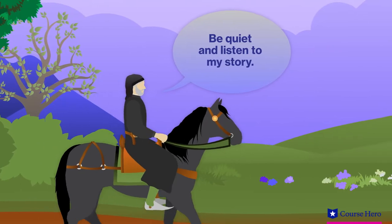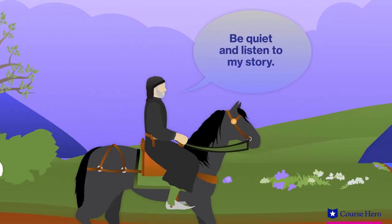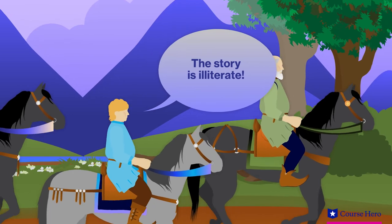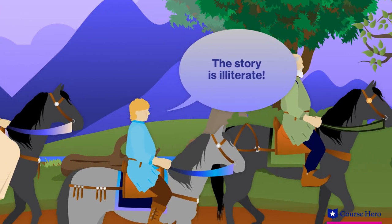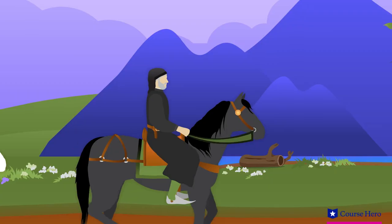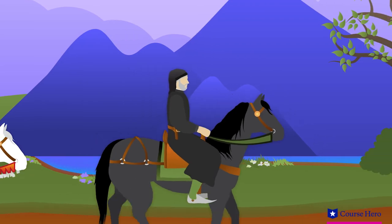During the second fit, Chaucer again asks the company to be quiet and listen to his story. As he continues, Harry Bailey interrupts him, saying his story is illiterate and that the rhymes are purgatory. Chaucer agrees to tell a story in prose instead.